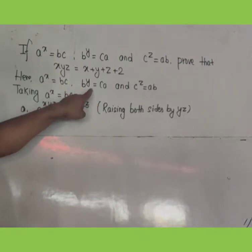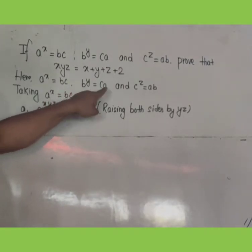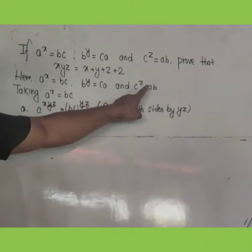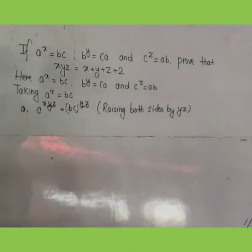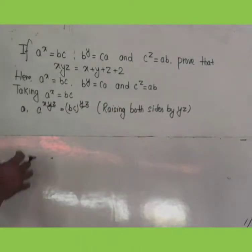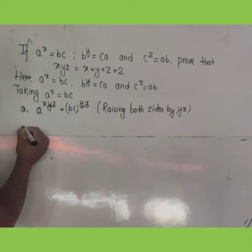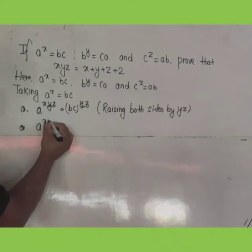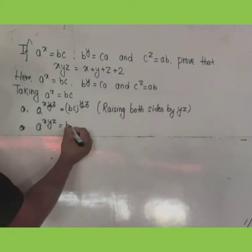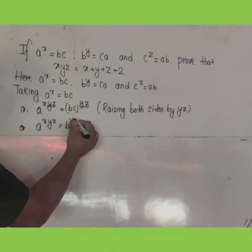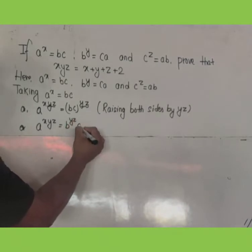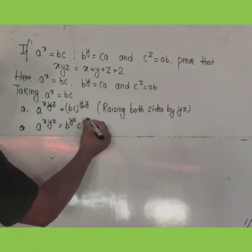If you choose the second expression b^y = ca, you raise both sides by xz. If you choose the third, raise both sides by xy. Now we have a^(xyz) on the left side, and the right side becomes b^(yz) times c^(yz).